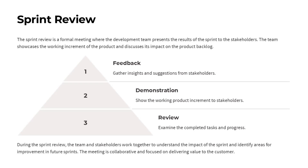The sprint review is a key meeting where the development team presents the results of the sprint to stakeholders. During this meeting, we gather feedback and insights on the working product increment we've delivered, demonstrating the new functionality and features we've built and reviewing the completed tasks and overall progress. This is a collaborative session where the team and stakeholders work together to understand the impact of the sprint and identify areas for improvement, ensuring we're delivering value to the customer and making progress on the product roadmap.